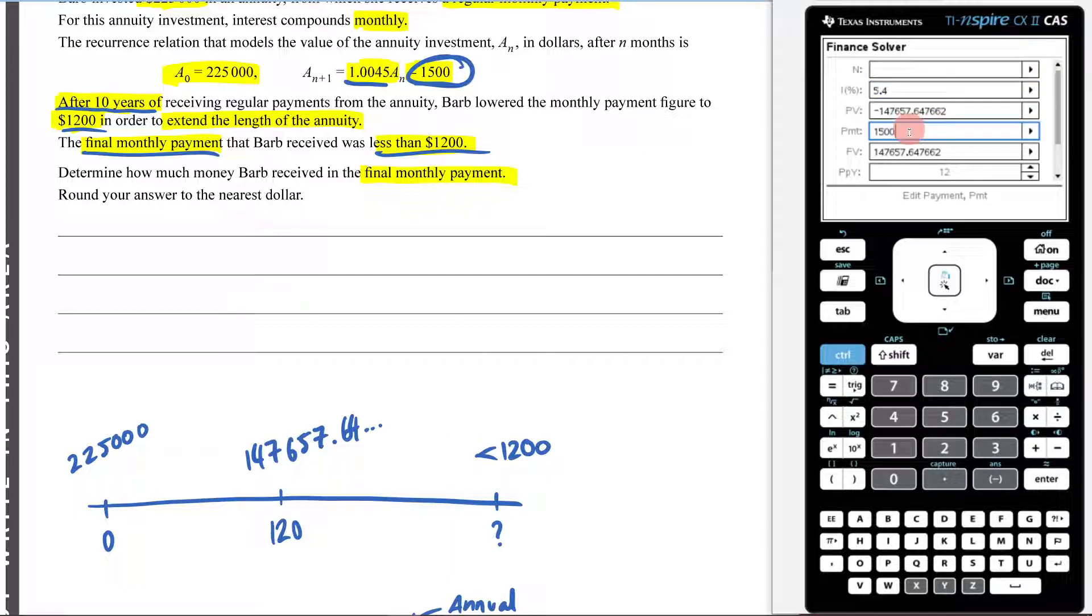I don't know what my N is. I do know my interest rate. My payments now are now 1,200 because I've lowered it. That's what they've said. That's happened after the first 10 years. I'm trying to figure out where this is going to be below 1,200. So let's just put 1,200 in there.